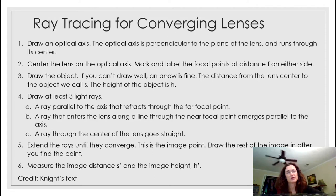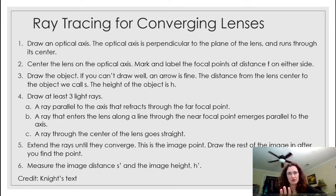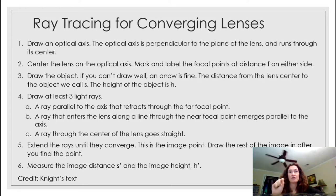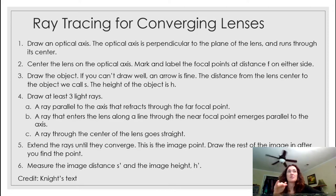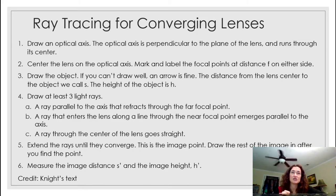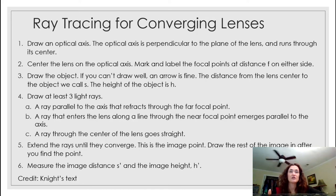When drawing ray diagrams, use at least three light rays. For converging lenses: the first ray is parallel to the axis and refracts through the far focal point; the second ray enters the lens along a line through the near focal point and emerges on the far side parallel to the axis; the third ray goes through the center of the lens and continues straight through.